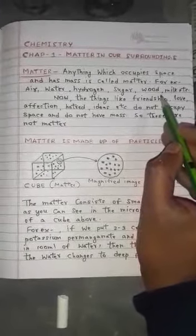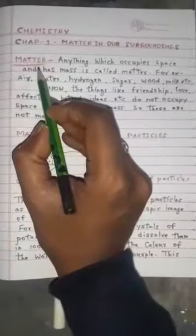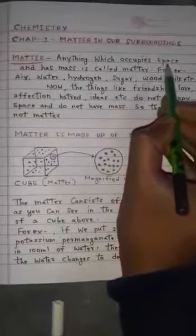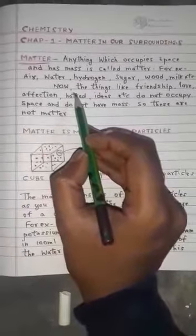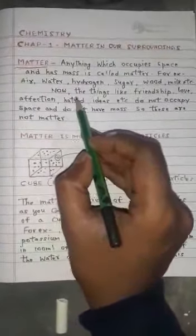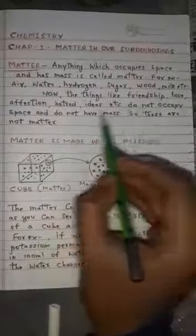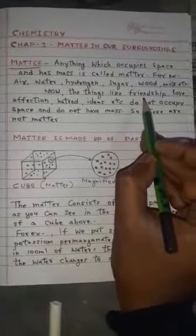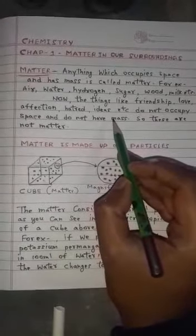Whatever the things you are seeing nearby you, that is matter, because it occupies space and has mass. Now, the other thing you need to remember: things like friendship, love, affection, hatred, and idea do not occupy space and do not have mass. Does friendship occupy space? Does an idea occupy space? Does it have mass?